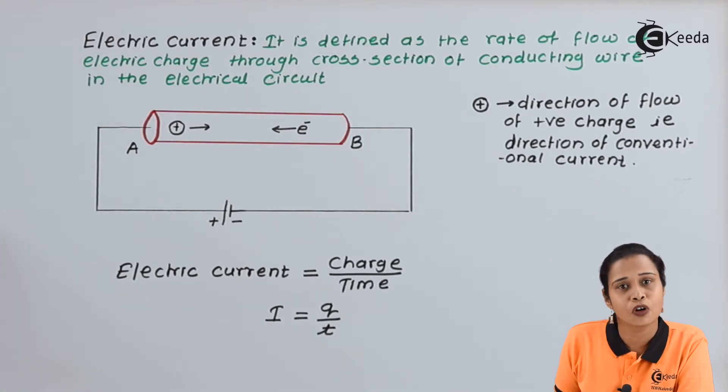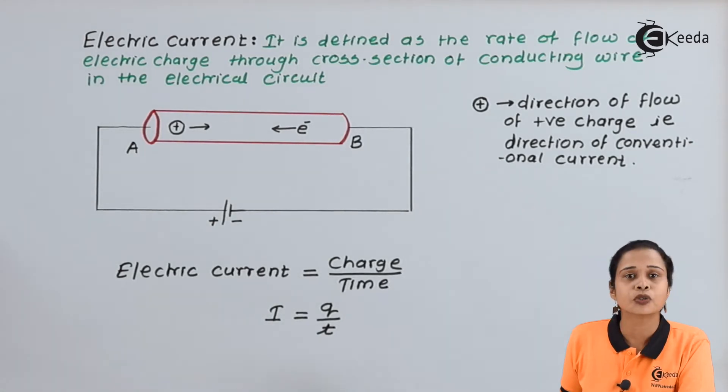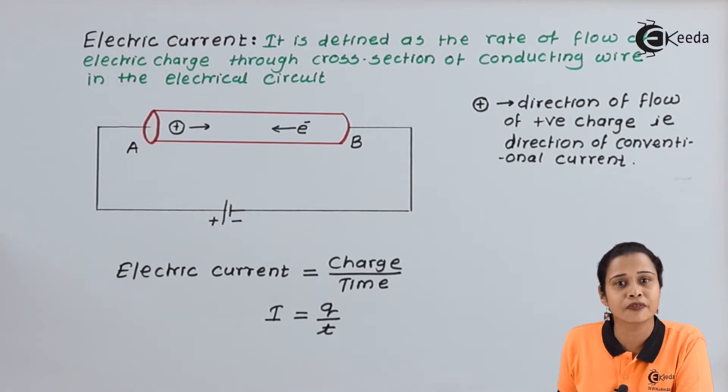This is another definition of electric current. Electric current can be defined as, in another way, that is flow of charges per unit time.